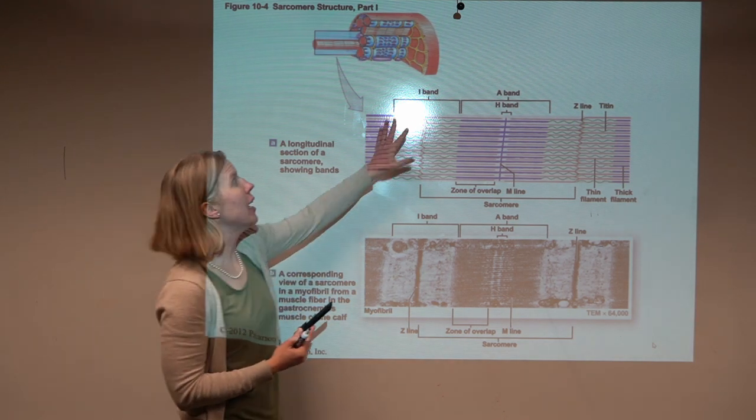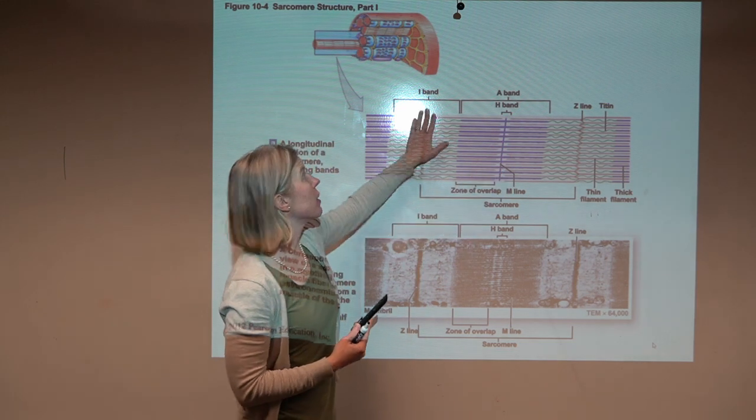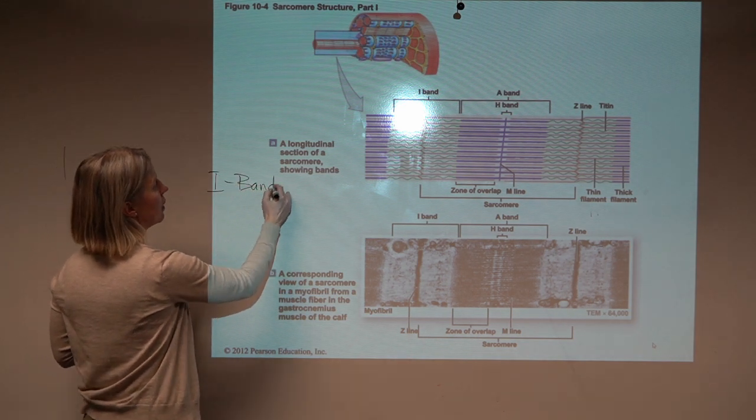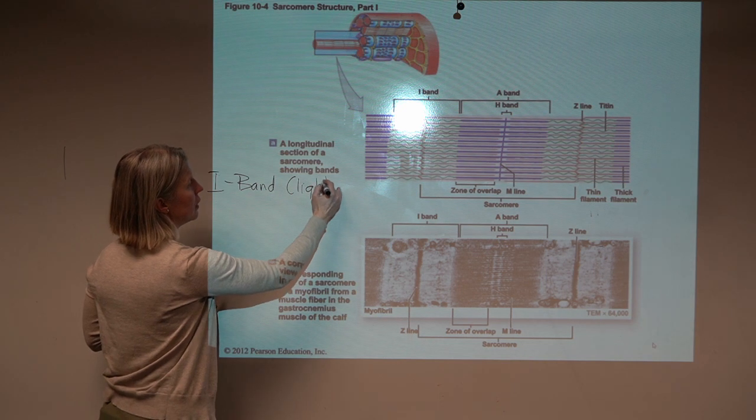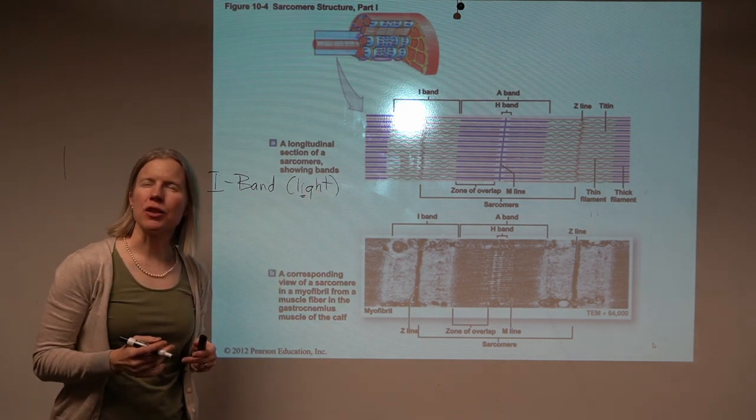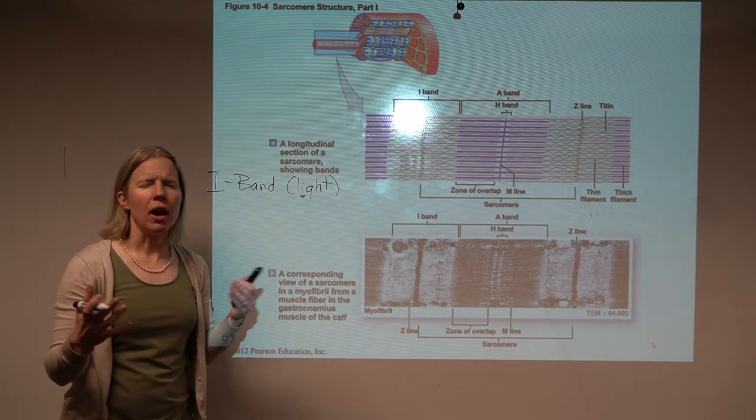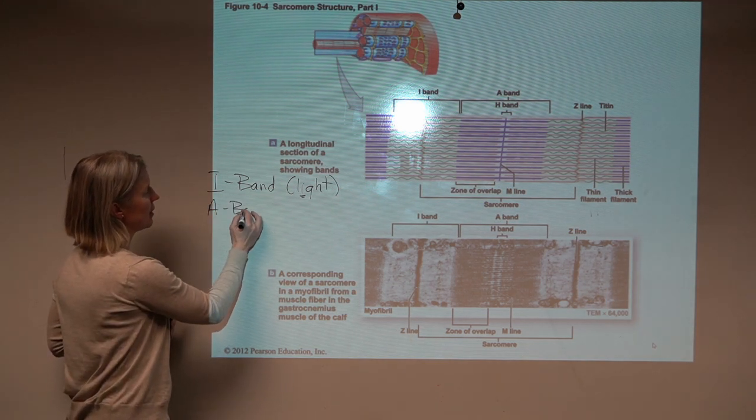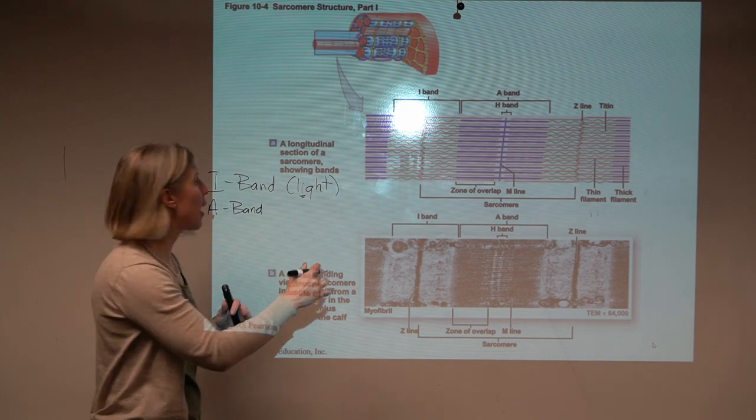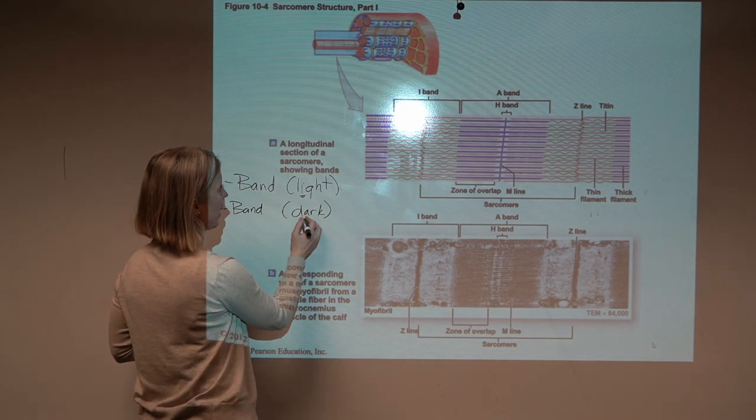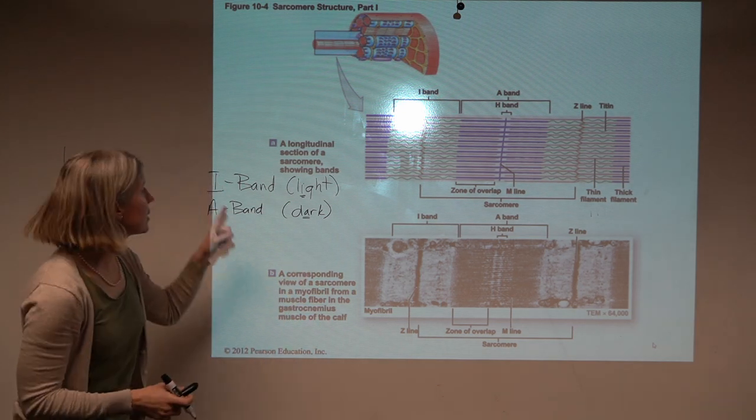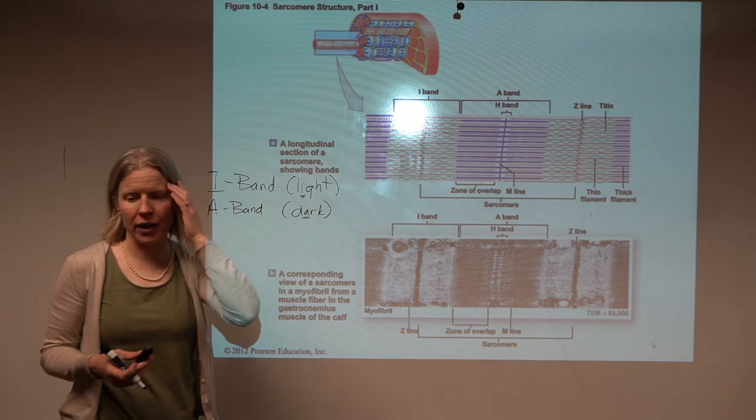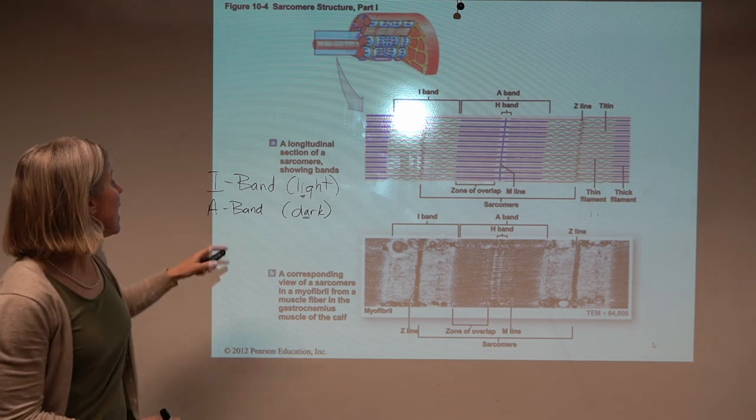So when we think about striations, it's this alternating light band, dark band. The light band is called the I band. It actually stands for, I think, isotropic, which means nothing to you, but it's lighter. More light is coming through in the microscope. The A band is anisotropic. It's not letting the light through. And we call that the dark band. The only way I have found to remember this is the I band, there's an I in light and an A in dark. And so those are alternating. That's what gives you striations.